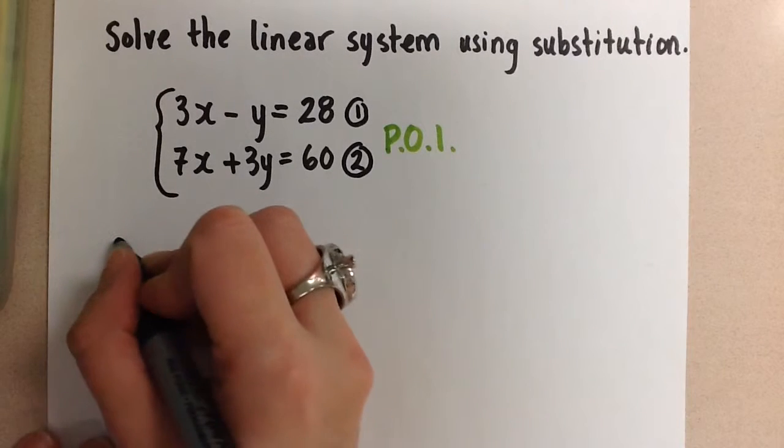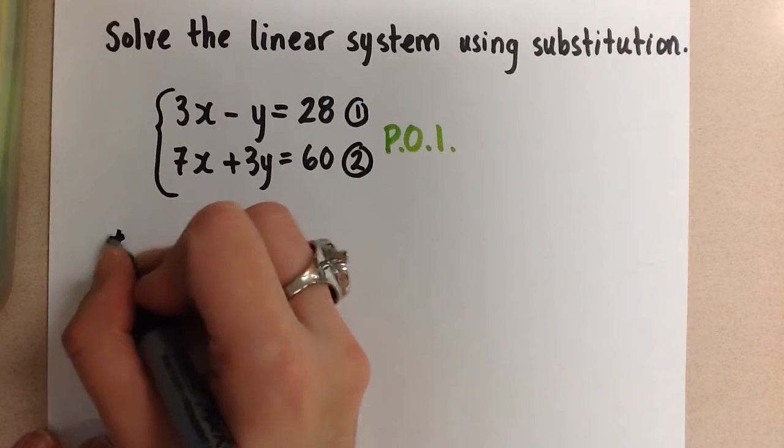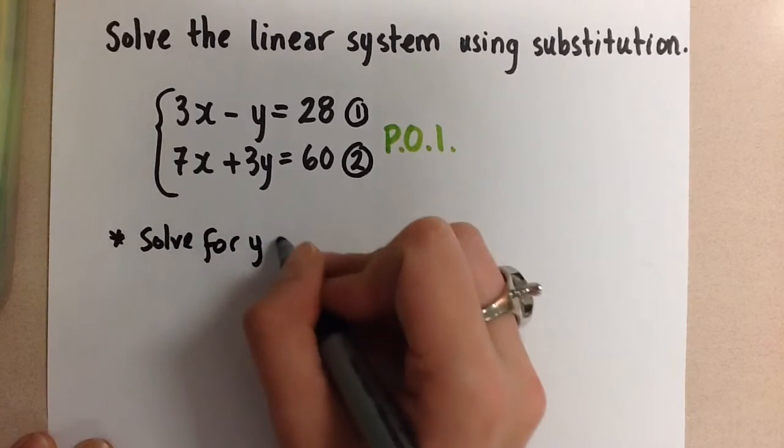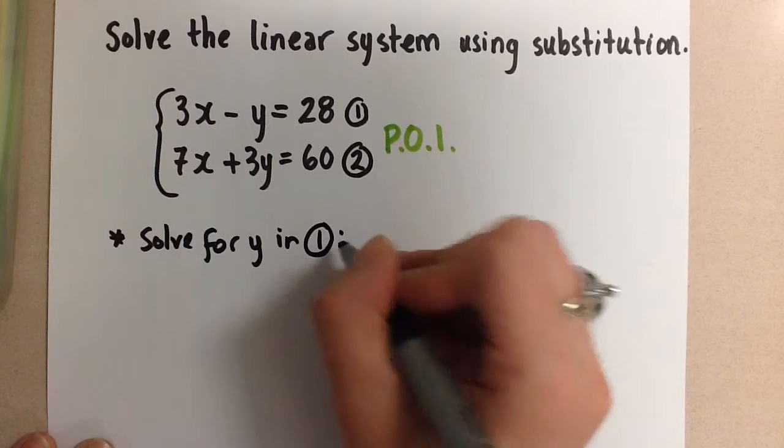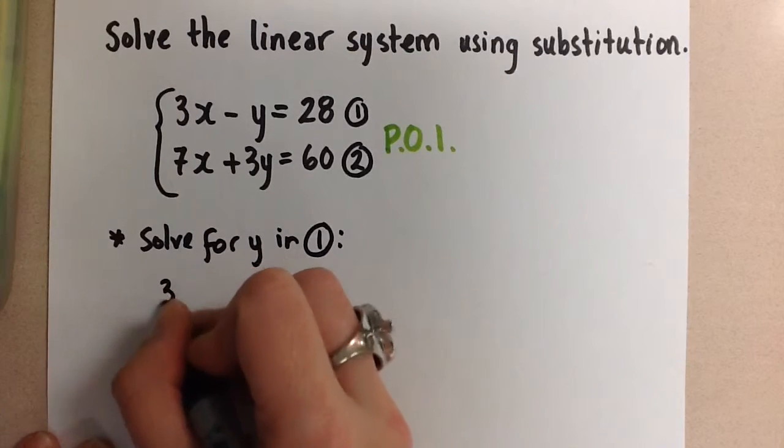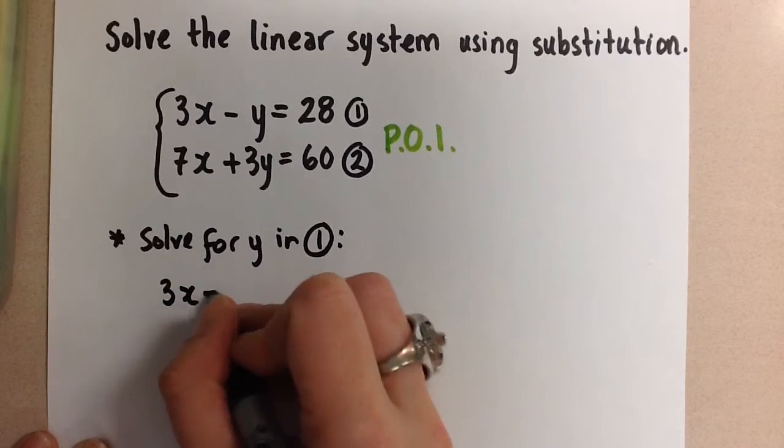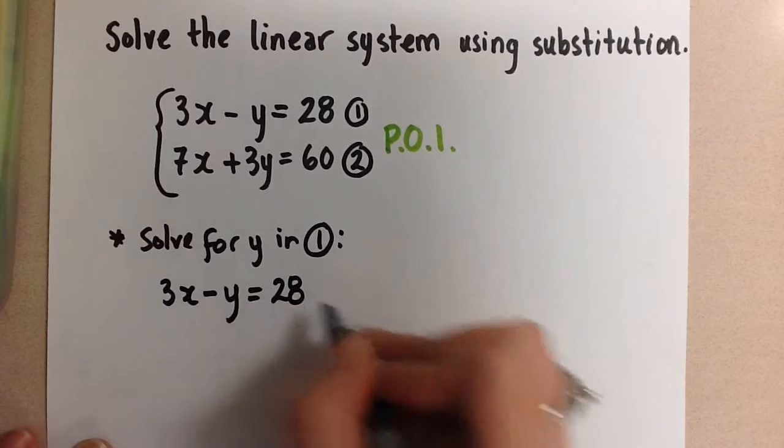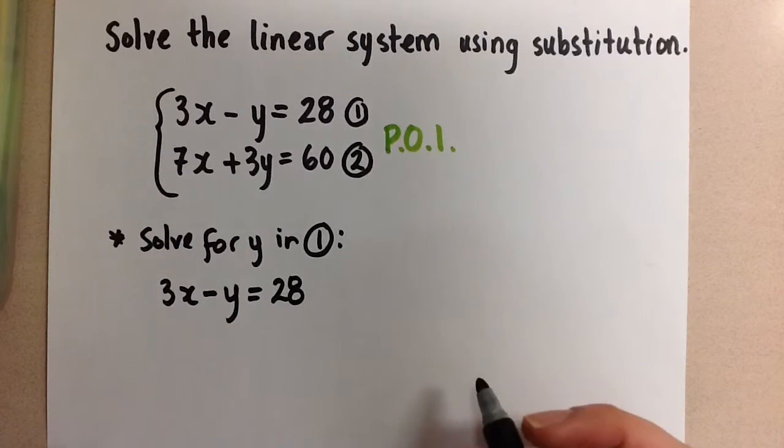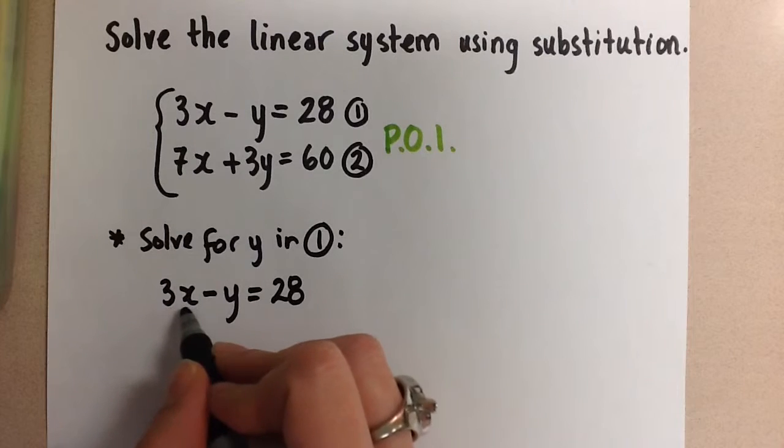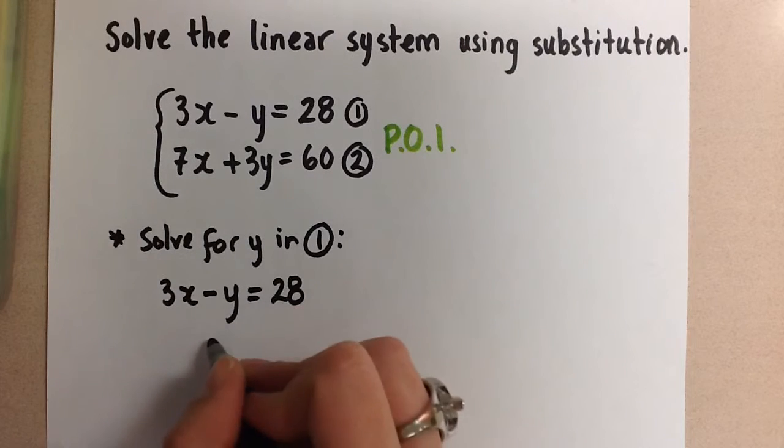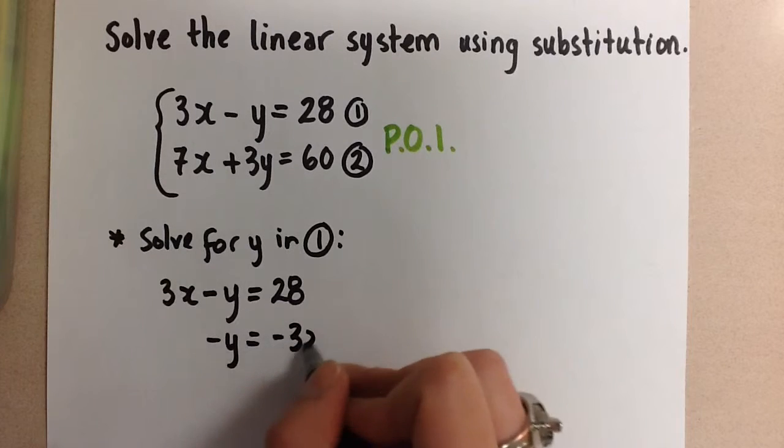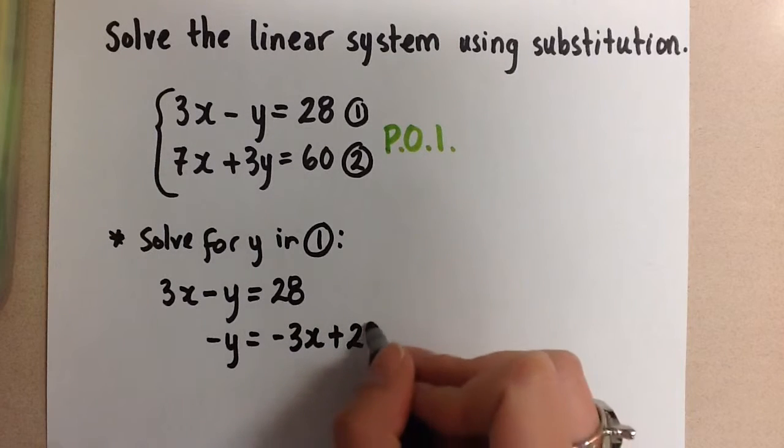So I'm going to start with that one. Here we're going to solve for y in equation number one. So we'll start with the first equation, 3x minus y equals 28. To get the y by itself, we know that we're going to move the 3x term to the other side. This is going to leave us with negative y equals negative 3x plus 28.